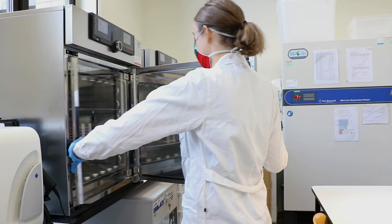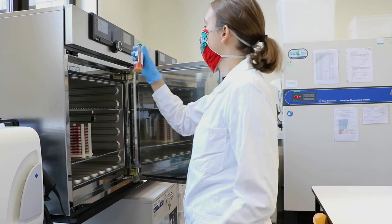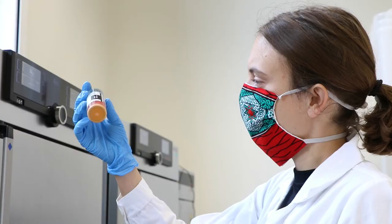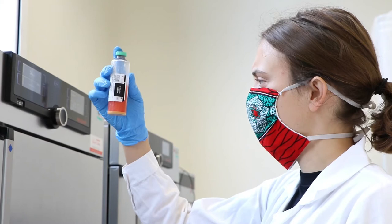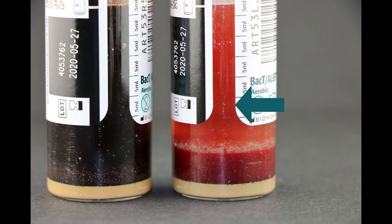In the conventional incubator, blood cultures are incubated for 7 days. Signs of growth are checked at regular time points of the day. During the first 3 days, we check every morning and evening. During the remaining 4 days, we check every morning.